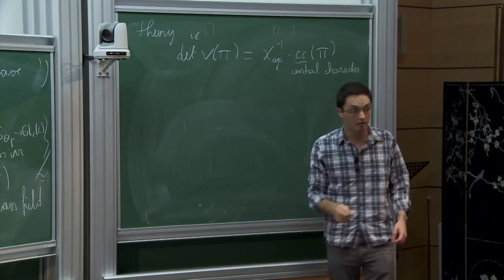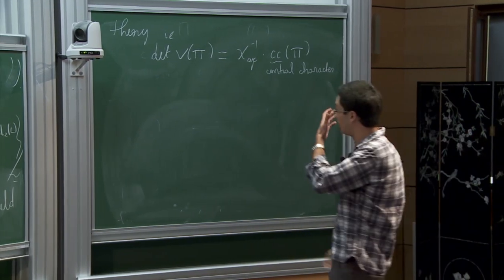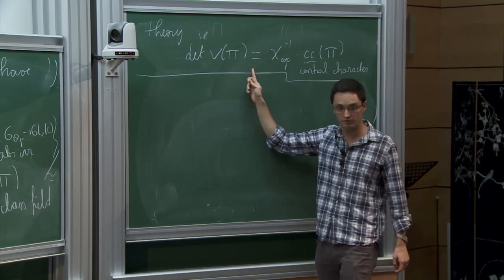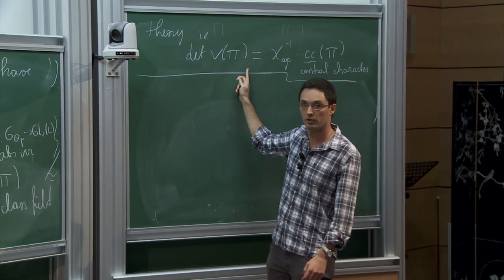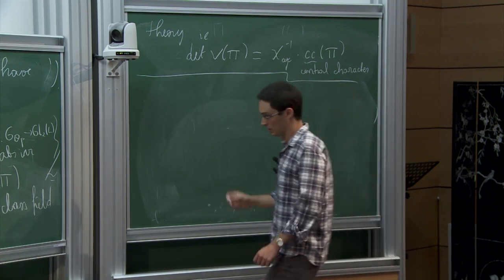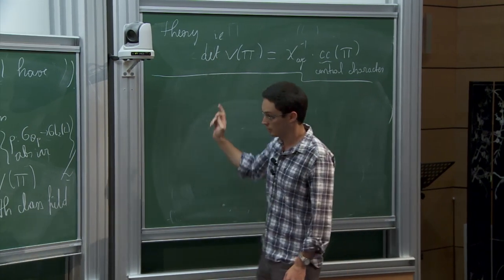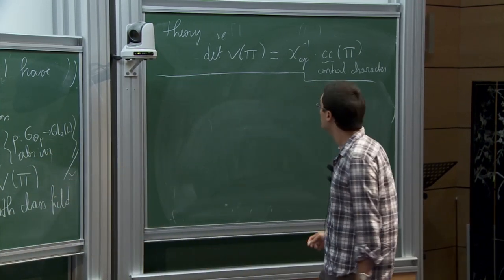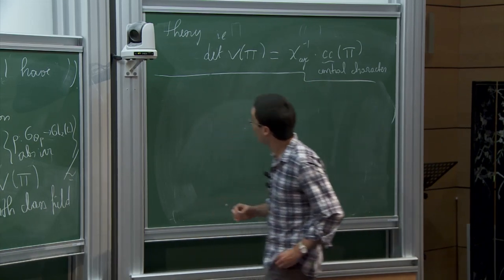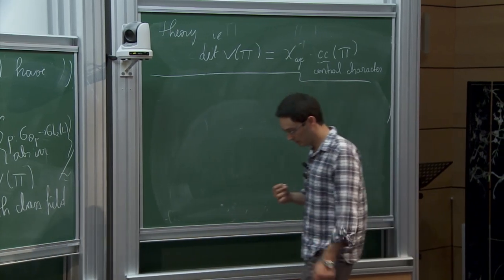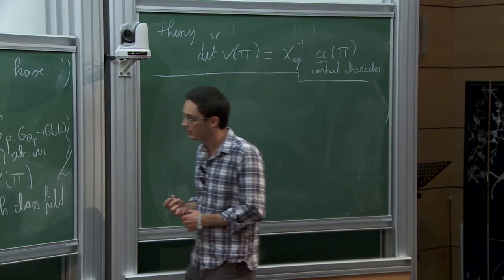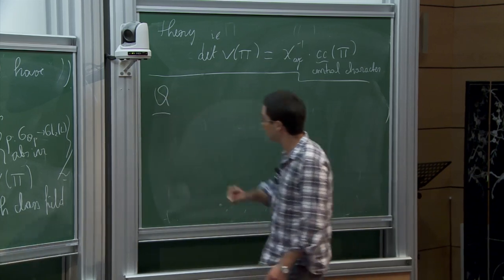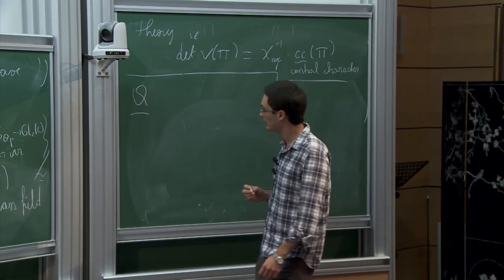I will add something crucial for one of the applications: this is compatible with class field theory in the sense that the determinant of V(π) equals χ_cyclotomic inverse times the central character of π. I should stress that this equality is wrong in general if you don't consider absolutely irreducible non-ordinary representations — it is not a consequence of the bijection nor of the construction of the functor itself.